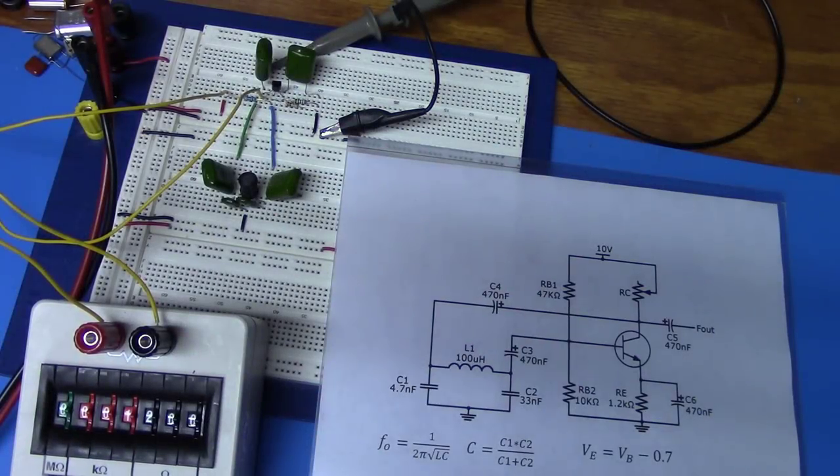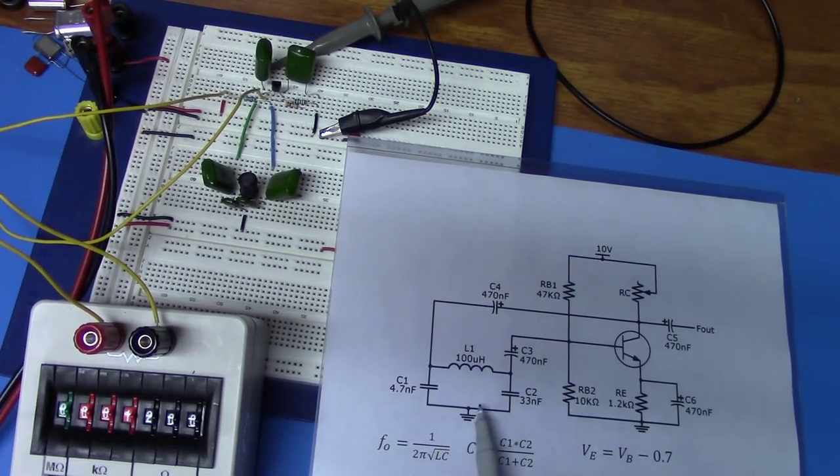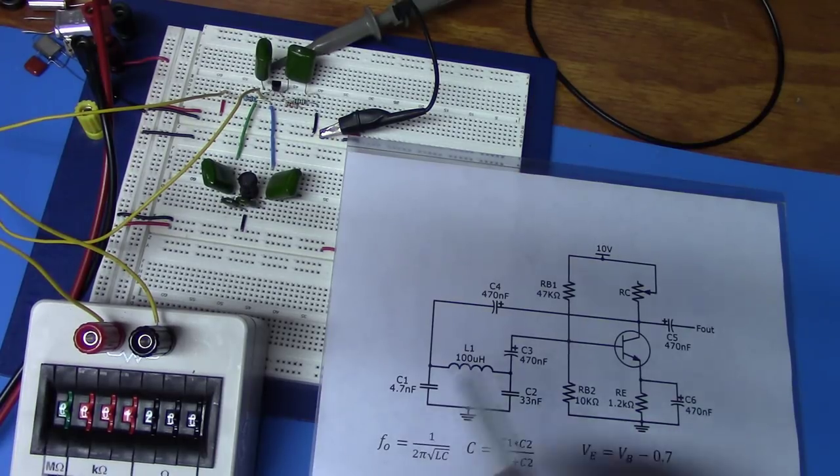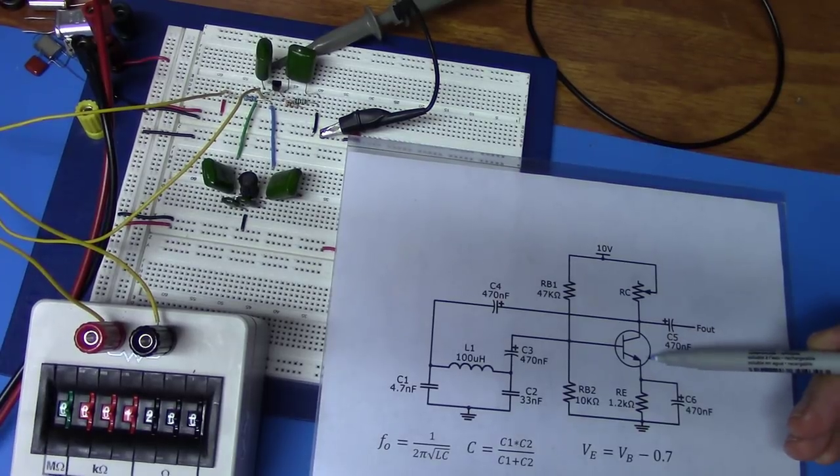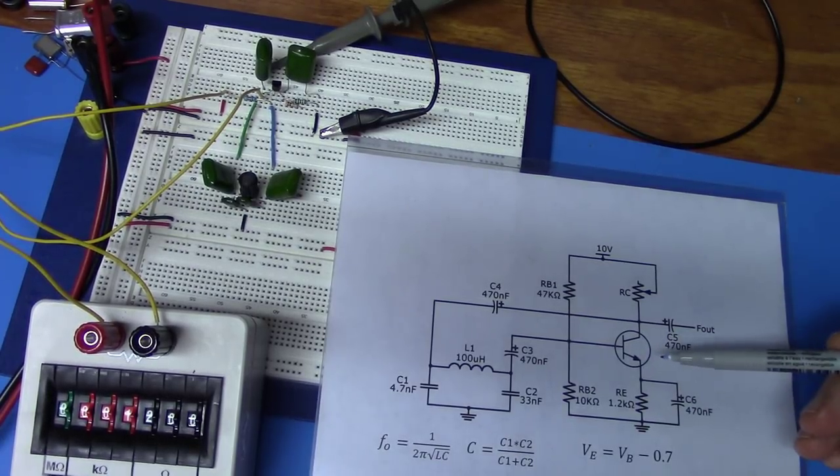Hello everybody and welcome back to another video. Today I'd like to talk about the Colpitt's oscillator once again. And in lieu of using an op-amp as we did in video number 72, we're going to be using a transistor to give us the amplification we need to get the circuit into oscillation.